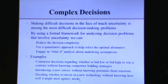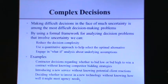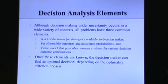We have all the elements of a complex decision, and we can use tools like expected monetary value or a decision tree. By using a formal framework for analyzing decision problems that involve uncertainty, we can reduce complexity by structuring it. We can use a quantitative approach — not heavy math — to select the optimal alternative, and we can engage in what-if analysis: what if the probability of the hurricane striking goes up or down? Examples include contractor bid decisions, introducing a new service, or deciding whether to invest in new technologies.